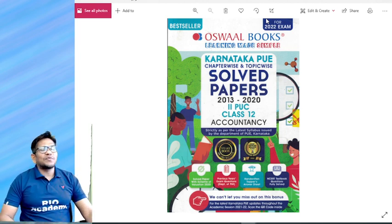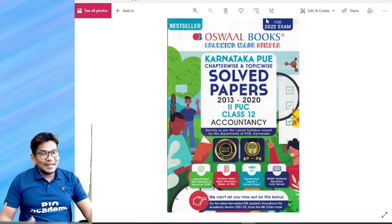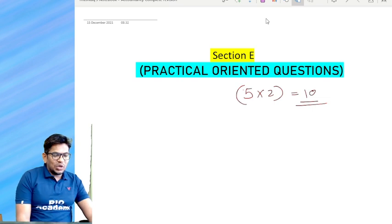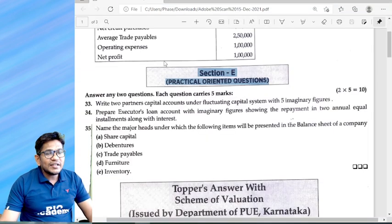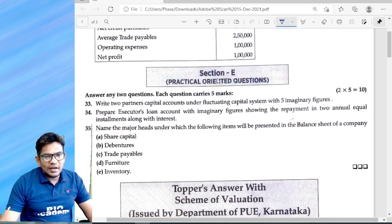I just suggest you to note it down. If you want, please, the link is in the description so you can just go and buy this. Oswal books for second POC, solved papers from 2013 to 2020. This is the accountancy book, my dear students. Let's solve the question papers that I have taken from Oswal books.